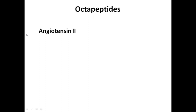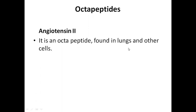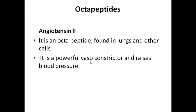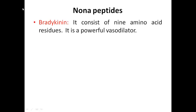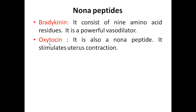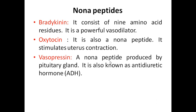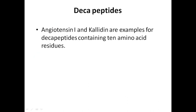Octapeptides: octa means eight amino acids. Angiotensin 2 is an octapeptide found in the lungs and other cells. It is a powerful vasoconstrictor and raises blood pressure. Nonapeptides: nine amino acids are linked together. Examples include bradykinin, which consists of nine amino acids and is a powerful vasodilator. Oxytocin is also a nonapeptide — it stimulates uterine contraction. Vasopressin is also an example of a nonapeptide produced by the pituitary gland, also known as anti-diuretic hormone.